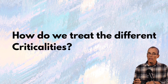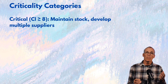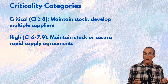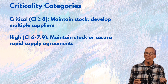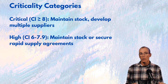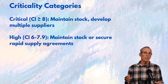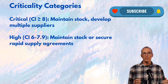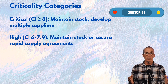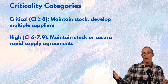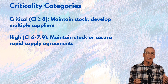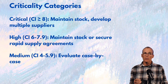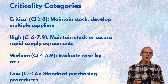How do we treat the different criticalities? If the criticality index is above eight, we want to maintain stock on hand and develop multiple suppliers if possible. Anywhere between six and 7.9, we want stock on hand and rapid supply agreements with contingency plans. For items like cooling towers and transformers — where you may not have funds for a spare — you can have rapid supply agreements with all specs written out so you can start ordering immediately during a catastrophe. Medium criticality items are evaluated case by case, and low criticality items use standard purchasing procedures.